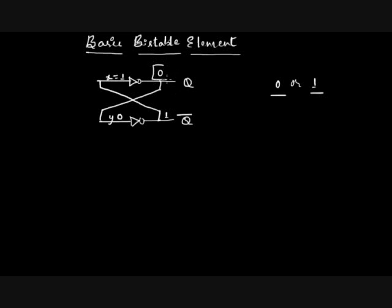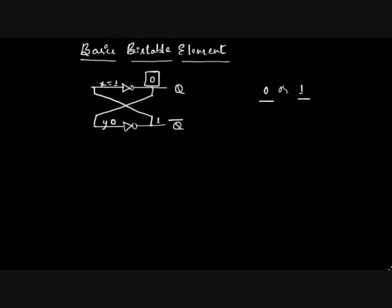Though the bi-stable element is in one of its two states, 0 or 1, sometimes it gets into a third state called meta stable state. It is the state when the outputs are halfway to logic 0 and logic 1.